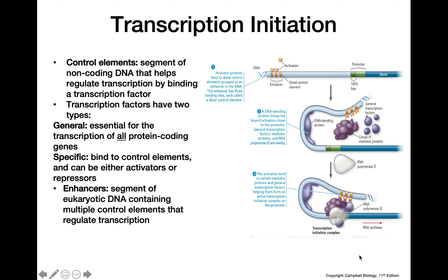Enhancers are segments of DNA that contain multiple control elements, which can then bind to transcription factors and help regulate transcription. In this picture, we can see an example of an enhancer with multiple control elements binding to activators — an example of specific transcription factors. This regulatory region then interacts with general transcription factors and other proteins to assist the transcription initiation complex in assembling and associating with the promoter, facilitating transcription.